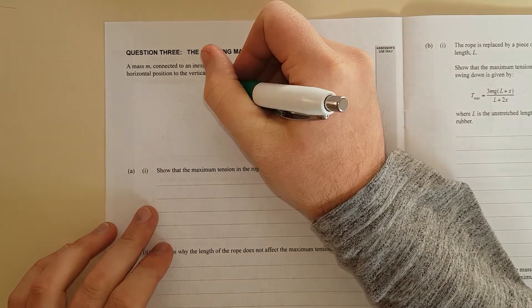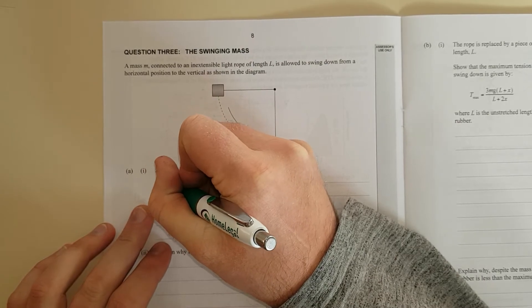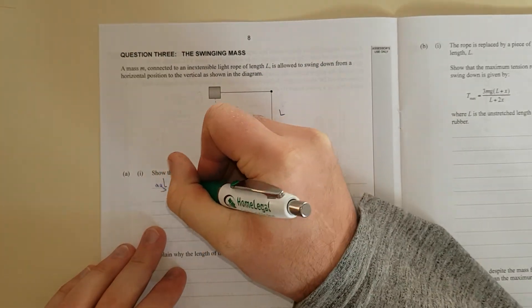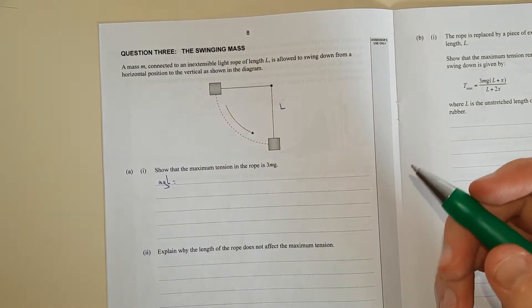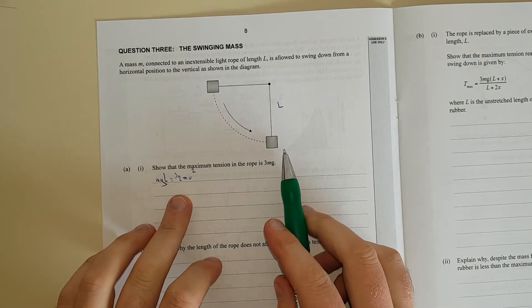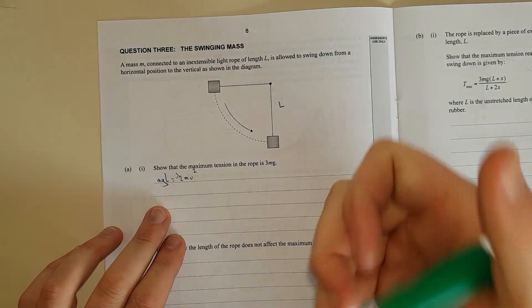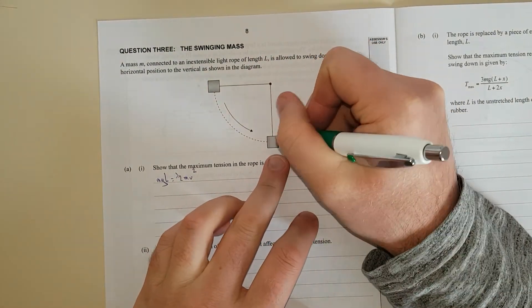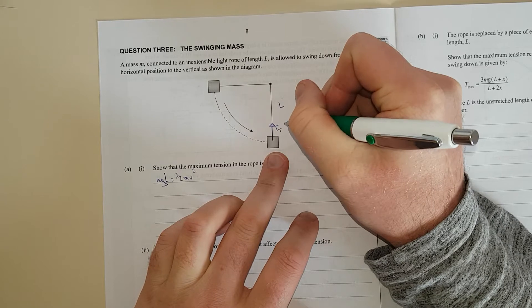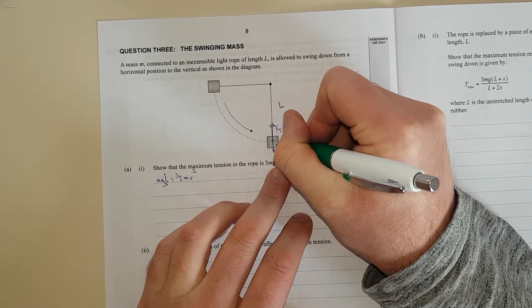So we have mg and the height gained is L from here to here. So mgl is going to be equal to half mv squared. So this is the energy consideration. Now we've got the forces consideration because it's asking for the maximum tension. So at the bottom we'll draw a free body diagram. We've got tension Ft and we have gravity Fg.